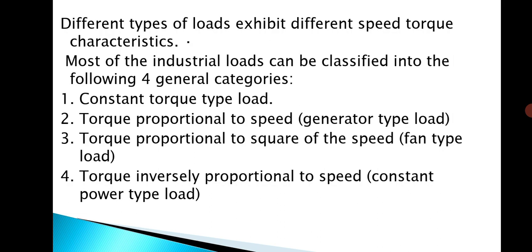The four general categories are: constant torque type load, torque proportional to speed which is generator type load, torque proportional to square of the speed which is fan type load, and torque inversely proportional to speed which is constant power type load. These are the four types of industrial load categories depending upon torque-speed characteristics.